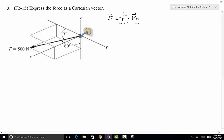So we already know this magnitude is 500 newtons. How do we find the unit vector? In this case we're going to use the coordinate direction angles to determine the unit vector.